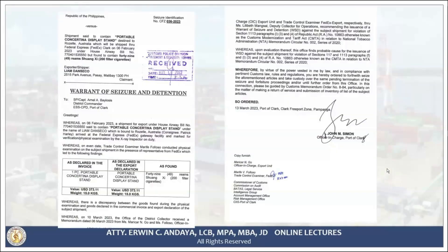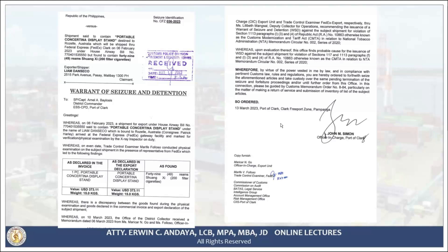Here is an example of a warrant of seizure and detention issued at the Port of Clark. It carries a seizure identification case number, the caption Republic of the Philippines versus the shipment, the name of the claimant, and is addressed to the district commander of the port. It contains the facts and circumstances constituting probable cause — when the goods arrived, what vessel, what was declared, and what was found — those are the facts and circumstances constituting probable cause.